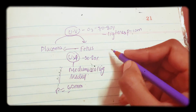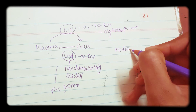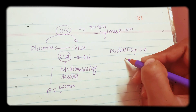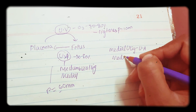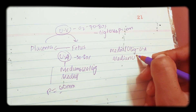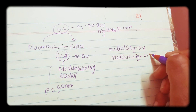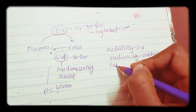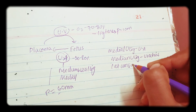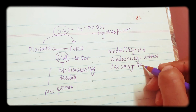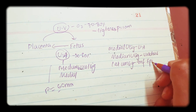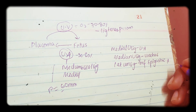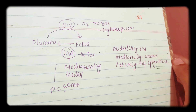Some important remnants: the medial umbilical ligament is a remnant of the umbilical artery, and the median umbilical ligament is a remnant of the inferior epigastric artery. These are some important points about placenta, and more will be covered in the next part.